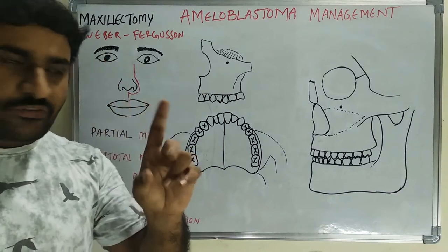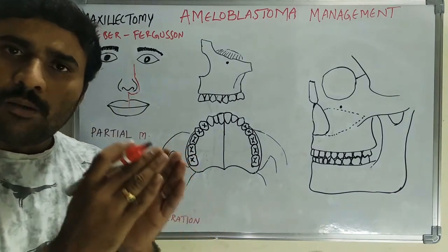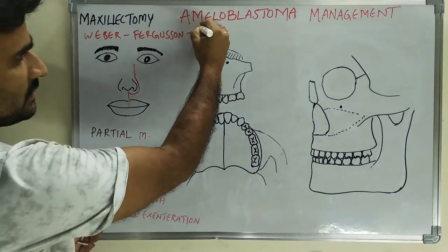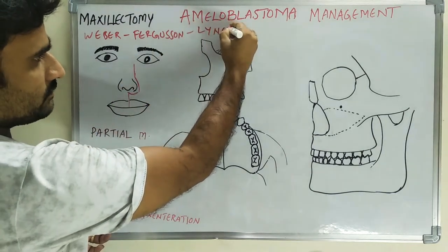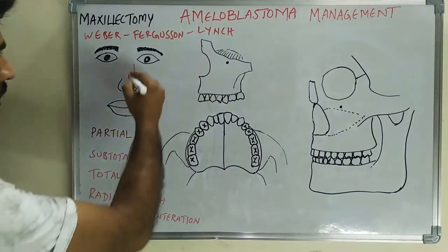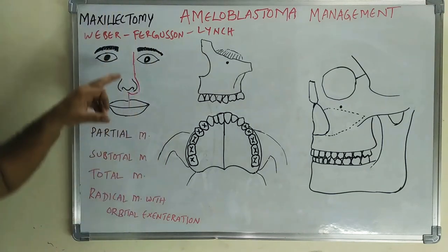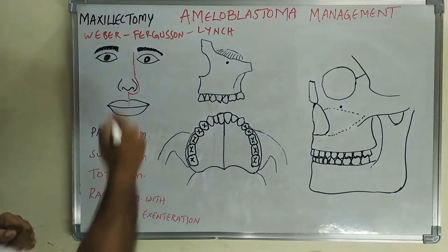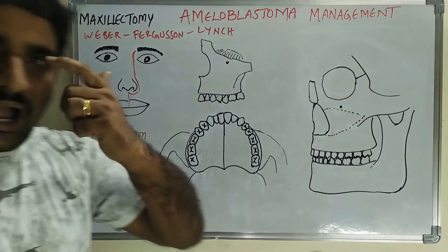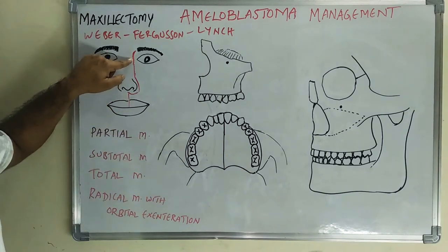There are two modifications for the Weber-Ferguson incision, depending on the amount of resection you want. The first one is Lynch modification, which is nothing but the medial extension of the Weber-Ferguson incision — it will go up to the eyebrow.